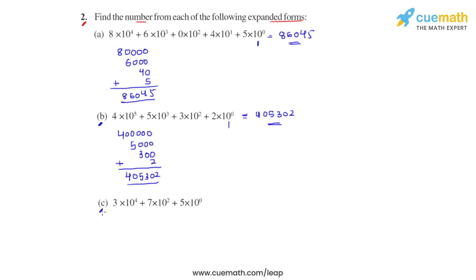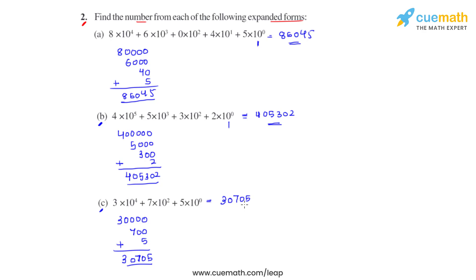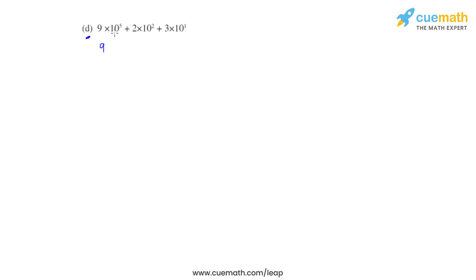For part c we do the same thing. 3 times 10 raised to 4, so 3 followed by 4 zeros. Plus 7 times 10 raised to 2, so 7 followed by 2 zeros. Plus 5 times 10 raised to 0, so that is 5 itself. We add up all these numbers and that gives us the answer as 30705. So the answer for part c is 30705.